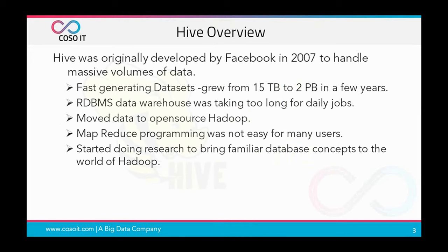Hive was originally developed by Facebook in 2007 to handle massive volumes of data. Facebook's data was growing at a very fast rate — it grew from 15 terabytes to 2 petabytes in a few years. Initially, Facebook's data processing infrastructure was built using a commercial relational database, and it was taking too long for daily jobs, so there was an urgent requirement for infrastructure that could scale along with the data.